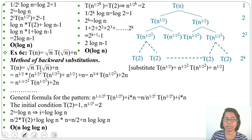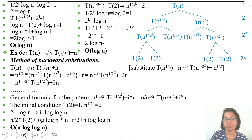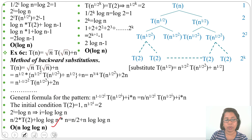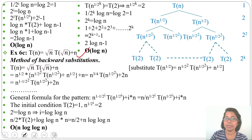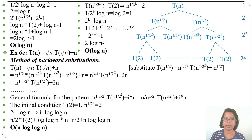You can also try the recursion tree method for this example, though it will be more complicated. In both backward substitution and recursion tree methods you will get the same answer: O(n · log(log n)). Sometimes backward substitution is easier, sometimes recursion tree is easier — for this particular example, backward substitution is more straightforward. In today's lecture I analyzed recurrence relations including root functions. In the next lecture I will discuss divide-and-conquer recurrence relations. If this lecture was helpful, please like and subscribe.